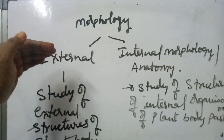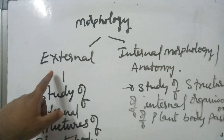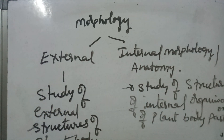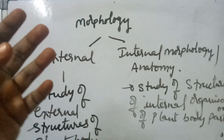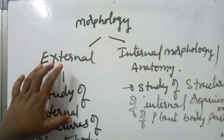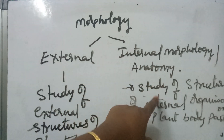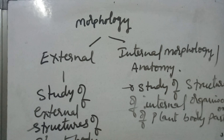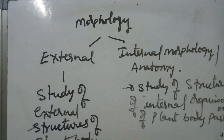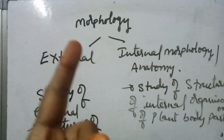Under morphology, we have external morphology and internal morphology. Under external morphology, we discuss important topics like root, stem, leaf, inflorescence, flower, fruit, and seed. Under internal morphology — which is anatomy — we discuss tissues, different tissue systems, and the internal parts present in stem, root, and leaf. This is the introduction to how morphology is covered in the first year textbook.